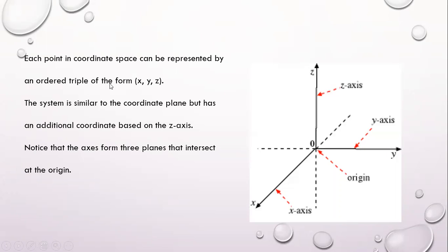You can represent any location in three-dimensional space using a three-dimensional coordinate system, sometimes called coordinate space. Each point in coordinate space can be represented by an ordered triple of the form (x, y, z). If you just have x and y, it's an ordered pair, but with three variables it's an ordered triple. The system is similar to the coordinate plane but has an additional axis. The important point here is the origin — the intersection between the three axes: x-axis, y-axis, and z-axis, including their negatives.